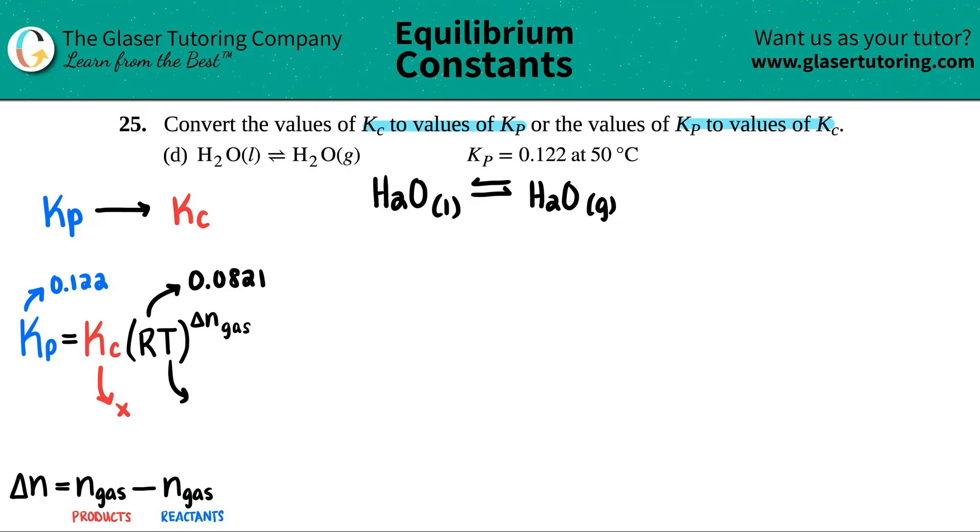Capital T stands for temp always, right? But in order to plug it in here, it needs to be in Kelvin. They gave me the temp in Celsius. So the first thing I have to do is I have to convert this 50 degrees into Kelvin. How do we do that? We just plus 273. So 50 plus 273, I get 323 Kelvin. And that's the number that goes here.